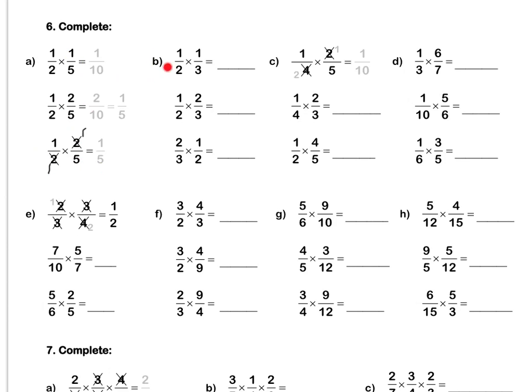Let's do b together. A half times a third: we cannot simplify in the question, so we multiply out and it's 1 sixth. A half times 2 thirds: we can simplify in our question. We can divide top and bottom by 2 to simplify our 2's. 2 divided by 2 is 1, 2 divided by 2 is 1. Then we multiply out and our answer is 1 third in its simplest form.